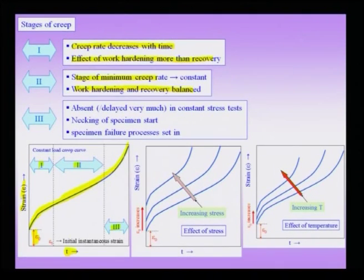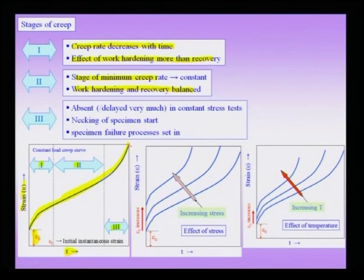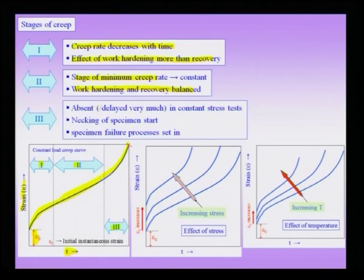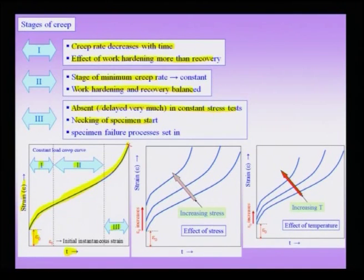Region 3, where necking begins and damage processes like cavitation set in, can be absent or delayed in a constant-stress test, but is observed in a constant-load test. This is the region you do not want to operate your material in, as it tends toward failure.